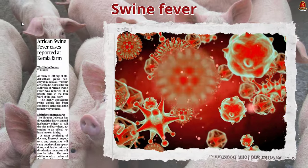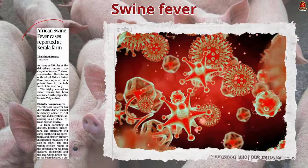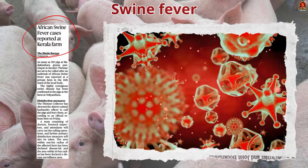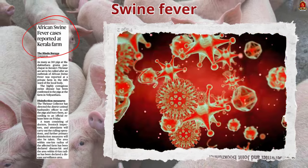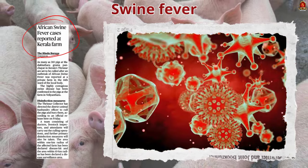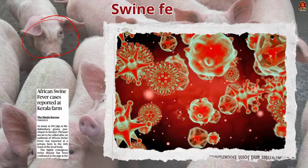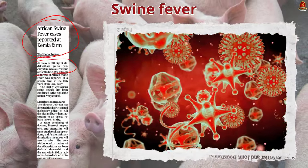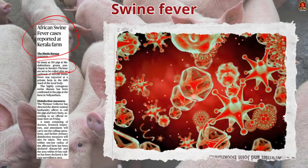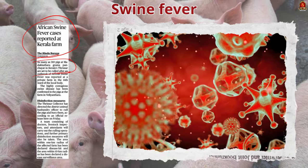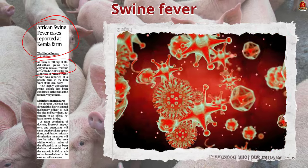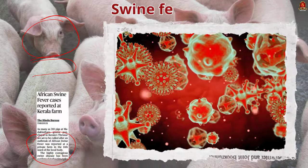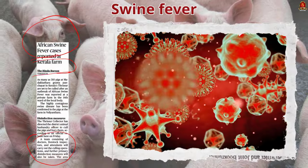This article talks about the recent outbreak of African swine flu in the Thrissur district of Kerala state. Following the report of this virus, the district authority of Thrissur ordered the killing of 310 pigs in a private farm. The district authority also declared a 1 km radius as a disease-hit area and a 10 km radius as a disease surveillance area.